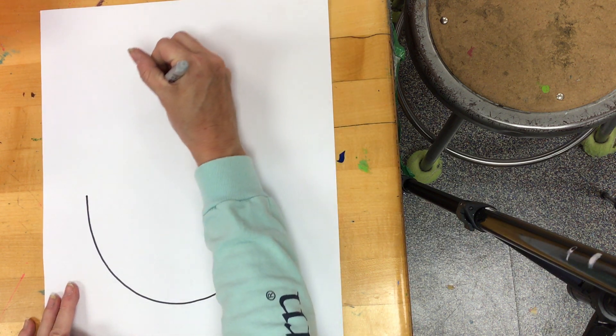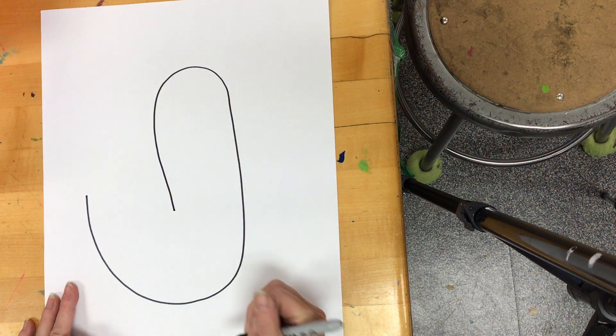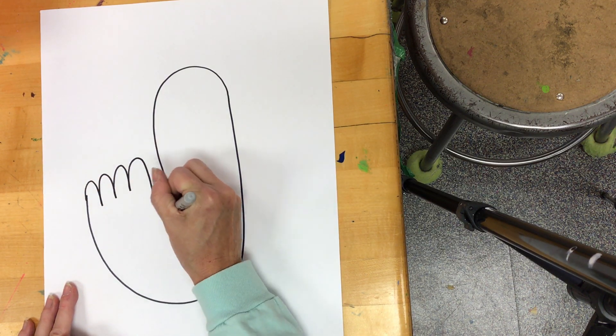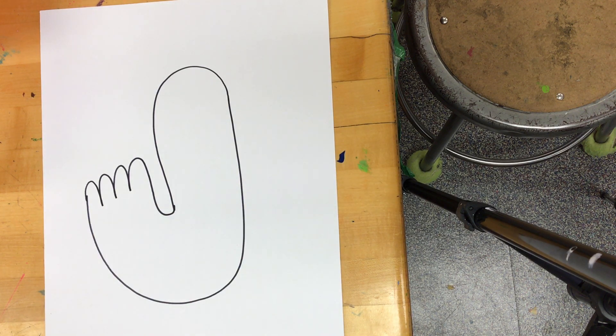On this side, I'm going to curve over the top, come down. Then, I'm going to give them some feathers right here. So, there is my duck body.